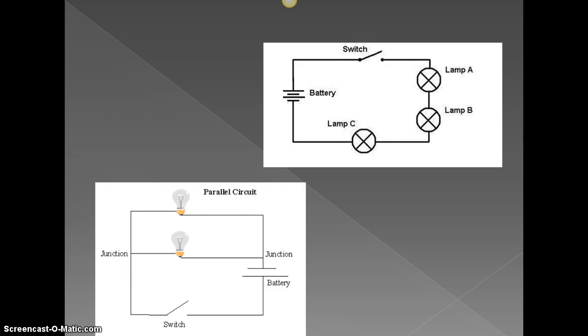And then this is an example of how we would draw a series circuit. So a battery, the flow of electrons goes around. We have a switch here that right now is open. If you close that, then the electrons will flow easily all the way around. This is a series, if lamp A goes out, then B and C will not be on as well.